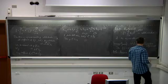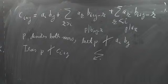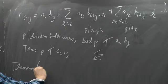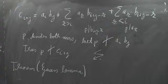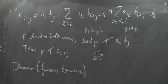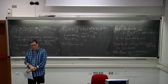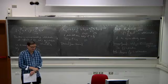Therefore p does not divide c_{i+j}, contradicting our assumption that all coefficients of fg are divisible by p. So f times g is indeed primitive. This lemma is used to prove Gauss's Lemma.